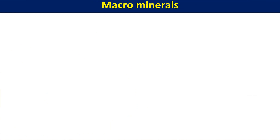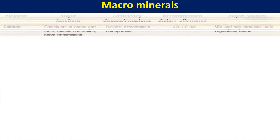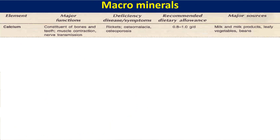Going into more detail: calcium is a major constituent of bones and teeth, required for muscle contractions, nerve signal transmissions, and the function of neurotransmitters. Calcium deficiency causes rickets, osteomalacia, and osteoporosis. Its recommended dietary allowance is 0.8 to 1 gram per day. Major sources are milk and milk products, leafy vegetables, and beans.